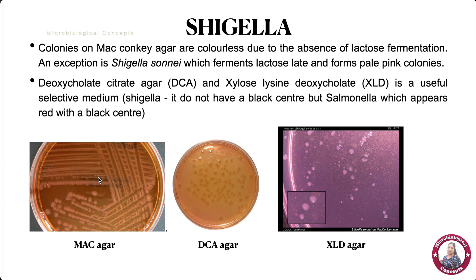Deoxycholate citrate agar and XLD agar are commonly used for identification of Salmonella and Shigella species. Salmonella produces red colonies with a black center due to hydrogen sulfide production, but Shigella produces red colonies without a black center because it cannot produce hydrogen sulfide. This allows us to easily distinguish Salmonella from Shigella on these agars.